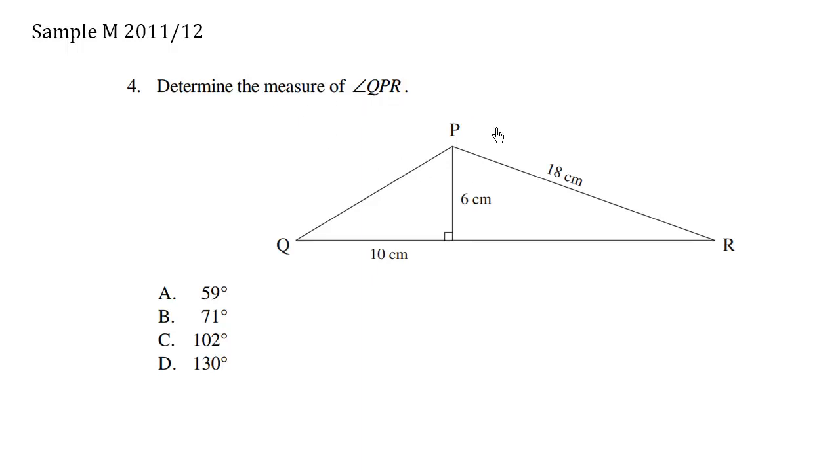Determine the measure of angle QPR. Q, P, R. We're trying to find this angle over here. Now what we see here is a base of 10 from here to here, height of 6, and a hypotenuse of 18 for this triangle over here.